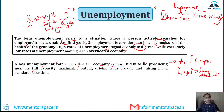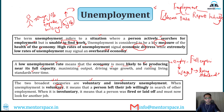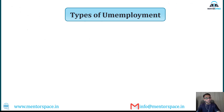The two broadest categories of unemployment are voluntary and involuntary unemployment. Voluntary unemployment means a person decides to quit a job by their own choice — if a person leaves their job willingly in search of other employment, this is voluntary unemployment. If a person is fired or laid off, that is involuntary unemployment.